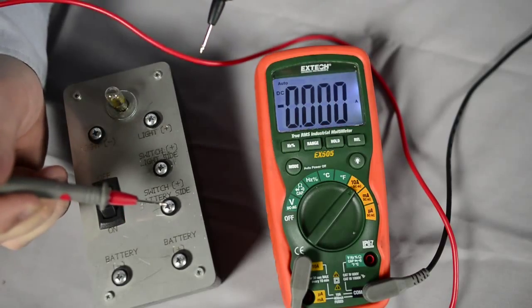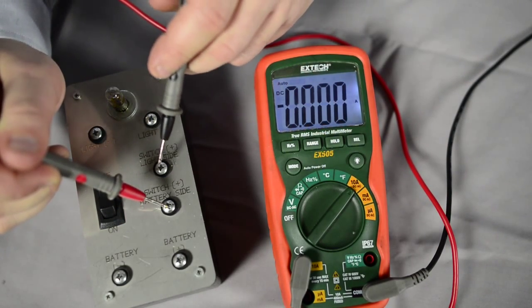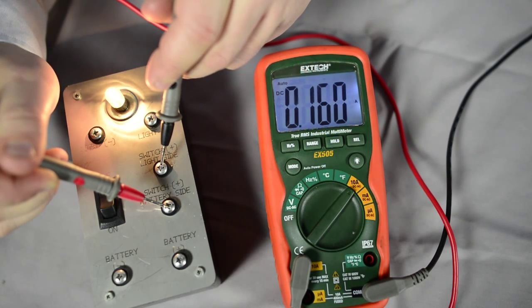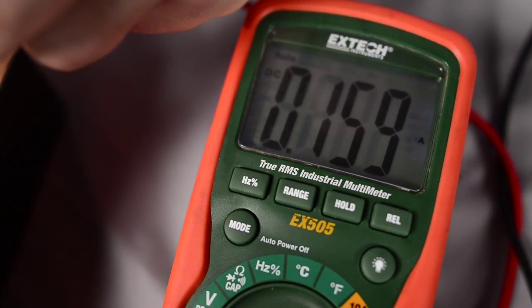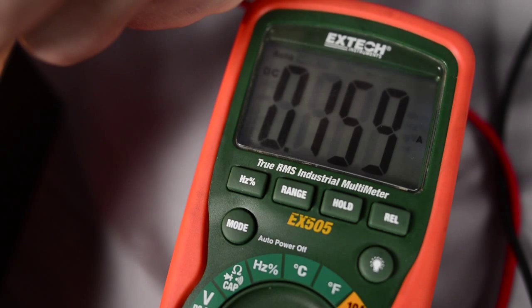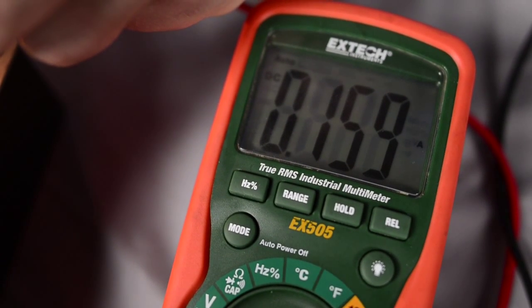Now we're going to use our multimeter to connect the circuit. We're going to go on both sides of the light switch posts here, and when I connect them, you'll see the light came on. And you can look at the display right now. It says it is pulling 0.159 amps.